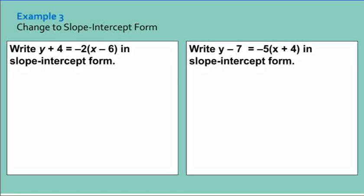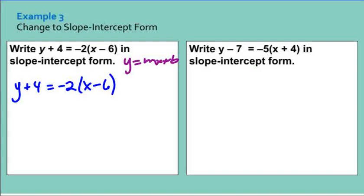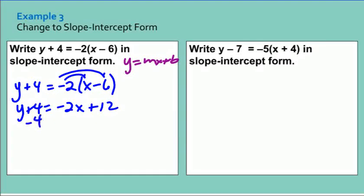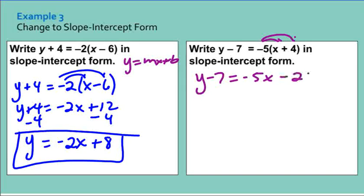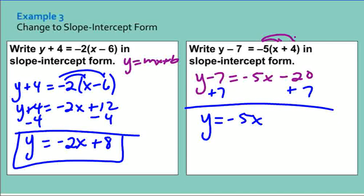Now we write in slope-intercept form, which is Y equals MX plus B. Starting with Y plus 4 equals negative 2 times X minus 6, I distribute the negative 2 to get Y plus 4 equals negative 2X plus 12. Getting Y by itself by subtracting 4, I have Y equals negative 2X plus 8. For the next one, distributing negative 5 gives Y minus 7 equals negative 5X minus 20; adding 7 gives Y equals negative 5X minus 13.